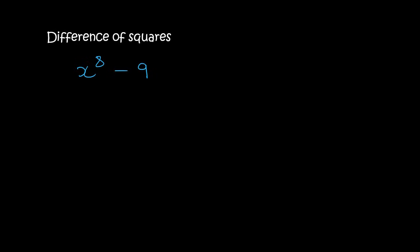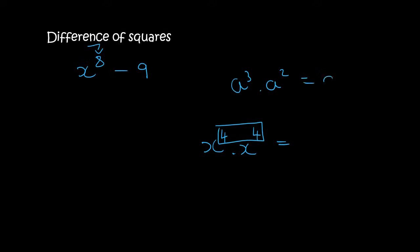Here's an interesting one which a lot of people struggle with, because they think: what times what gives you 8? But remember, when you are multiplying with exponents, what do you do with those numbers? For example, if I said a³ times a², you don't multiply — you add those exponents. So x⁴ times x⁴ does give you x⁸, because we are adding those numbers. So x⁴ can go here and x⁴ can go here.